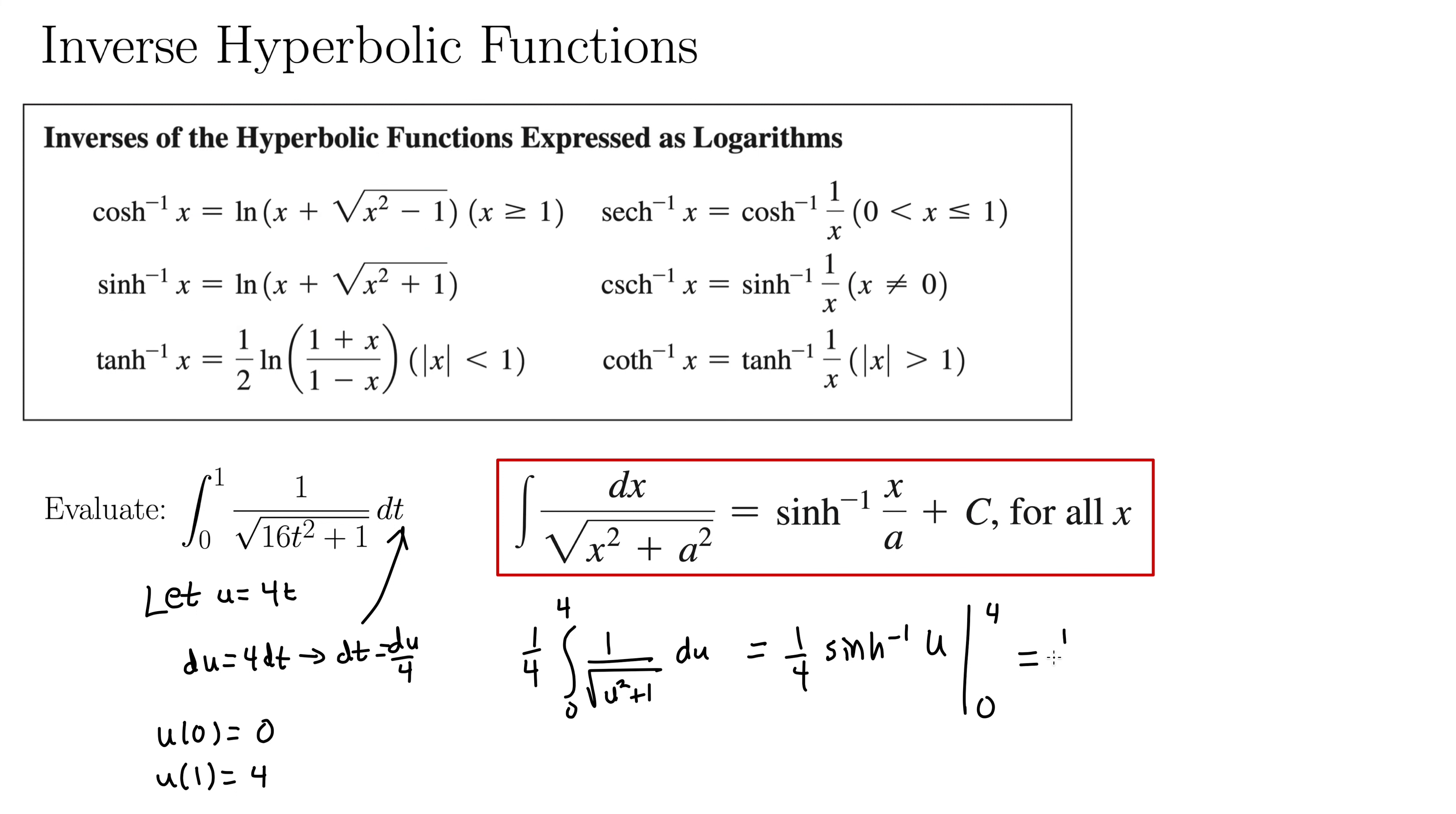So we have 1 fourth times natural log of x plus, or I guess make that u in our case. Let's be careful here. I guess it doesn't really matter. u plus square root of u squared plus 1. And we're evaluating this from 0 to 4. All right. Plugging everything in here, we get 1 fourth times the quantity.